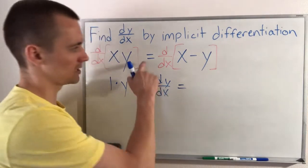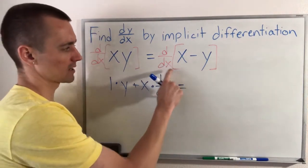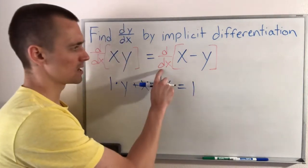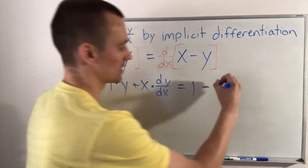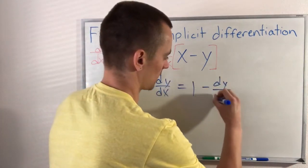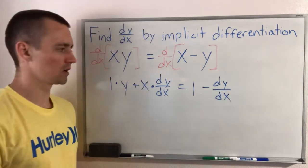So then this is going to be equal to the derivative of x with respect to x is just one. And then minus the derivative of y with respect to x, again, is just dy/dx.